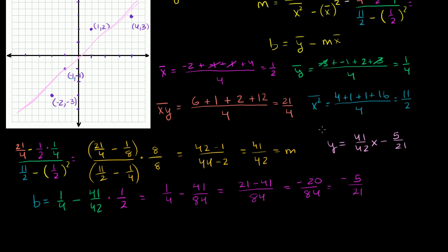In the last video, we were able to find the equation for the regression line for these four data points. What I want to do in this video is figure out the r squared for these data points — figure out how good this line fits the data, or the percentage of the variation in y that can be explained by a variation in x.